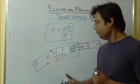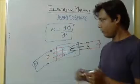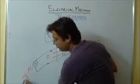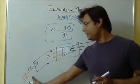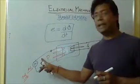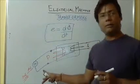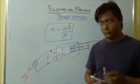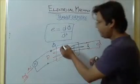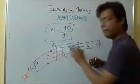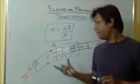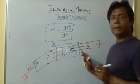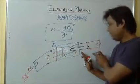The transformer primary is now connected to AC alternating voltage. This voltage is producing a current in the primary winding. Because of this winding current, a flux φ1 is set up, which is passing through the magnetic path — the core material — and linking with the secondary coil.